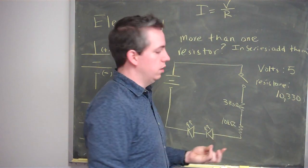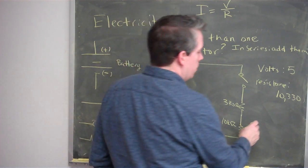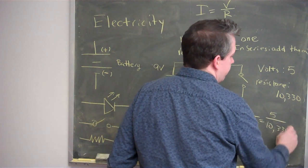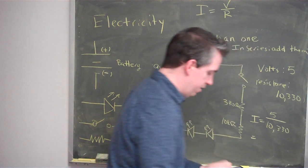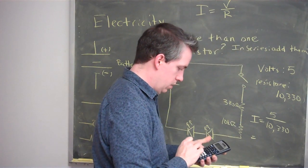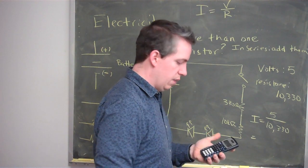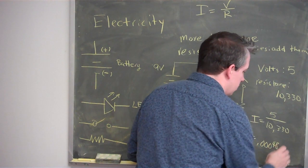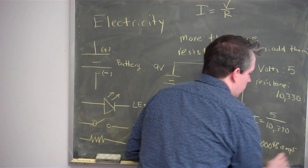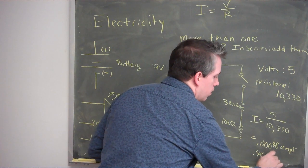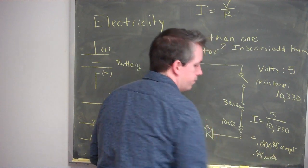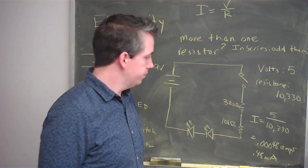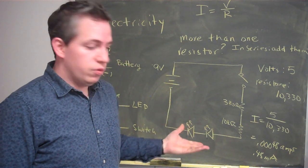That means I can figure out the current. The current on each of these light bulbs will be the same. The current equals the voltage divided by the resistance. Taking 5 divided by 10,330, I get 0.00048 amps, which equals 0.48 milliamps. That's getting closer to half of our previous video when we were looking at 7 milliamps. In series, it's not bad — you just add the resistance.